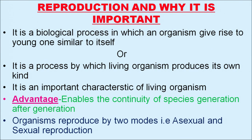First of all, what is reproduction and why is it important? It is a biological process in which an organism gives rise to a young one which is similar to itself, or it is a process by which a living organism produces its own kind. It is a very important characteristic of living organisms, and the advantage of reproduction is that it enables the continuity of species generation after generation.